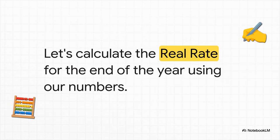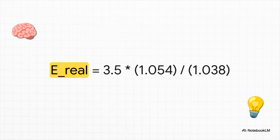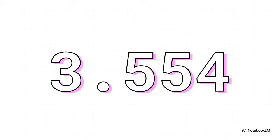Okay, enough theory. Let's plug our numbers in for the end of the year and see what this formula spits out. So we take our end-of-year nominal rate, which was 3.5. We multiply that by the U.S. inflation factor, that's 1 plus 0.054. And then we divide it all by the Israeli inflation factor, which is 1 plus 0.038. And what we get is 3.554.